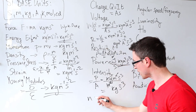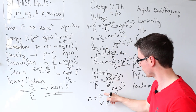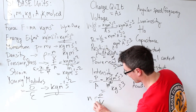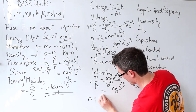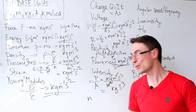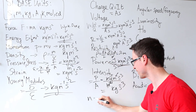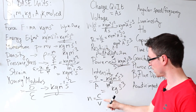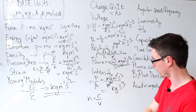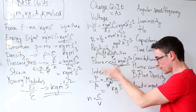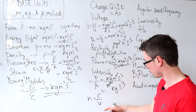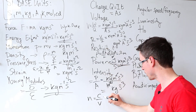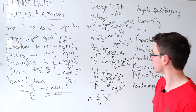Refractive index is just c over v, where c is the speed of light divided by the speed of light in that particular substance. That's speed over speed, so it has no units.